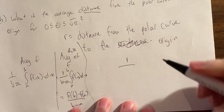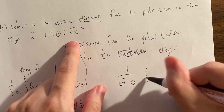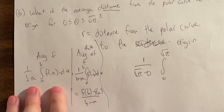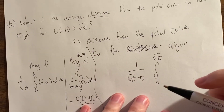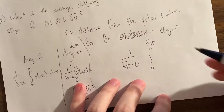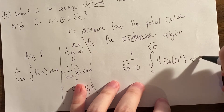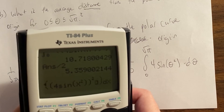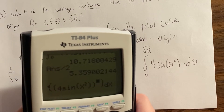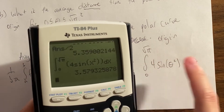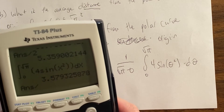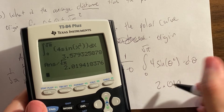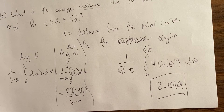In this case, we're going to do the average value formula: 1 over the interval from 0 to square root of pi, with just r — no r squared this time. Whatever you're taking the average of, you put it in the integral. The polar curve is 4 sine of theta squared. We type this in the calculator, deleting the squared from our previous entry, then divide by square root of pi because that's the average formula. We get 2.019 — rounding to three decimal places as usual with a calculator.